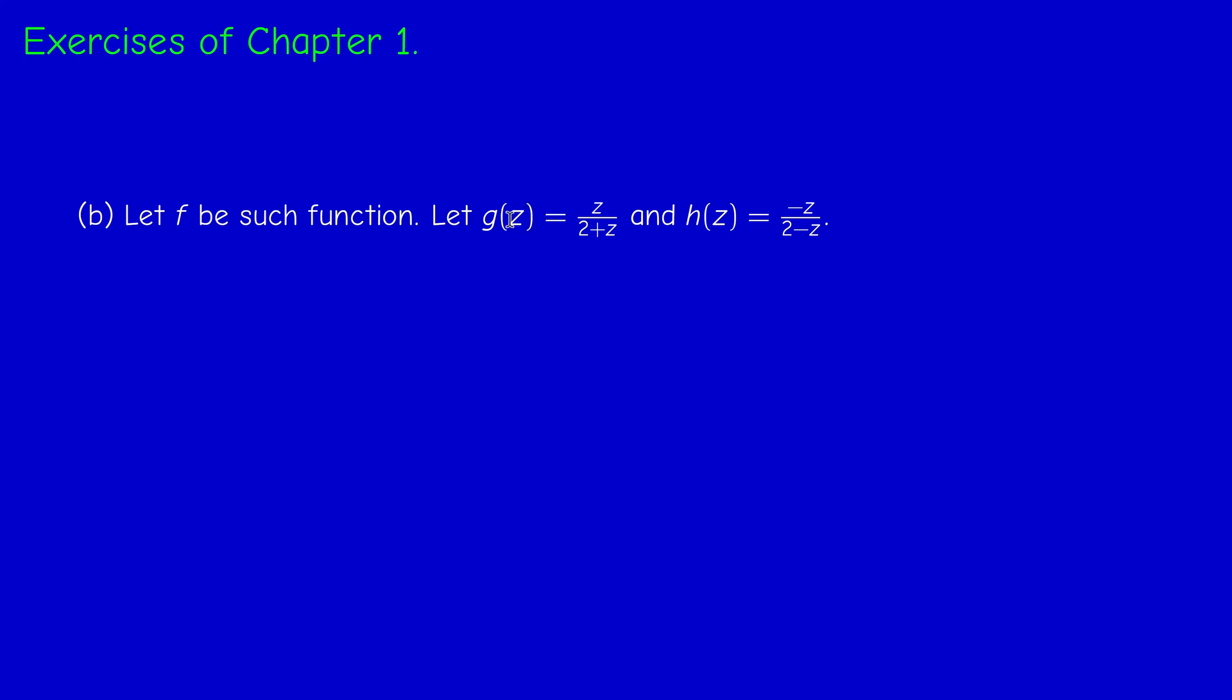Suppose that F is such a function that satisfies the requirement of part b. Then F and G are two analytic functions that coincide on the set one-half, one-third, etc., which has a limit point, which is zero actually, in the unit disk. So arguing as in the first part, F coincides with G on the unit disk. So F equals G on the unit disk.